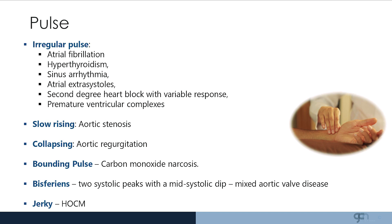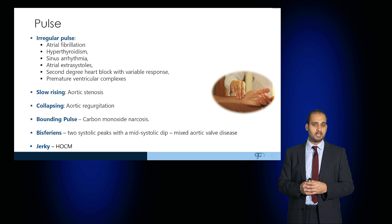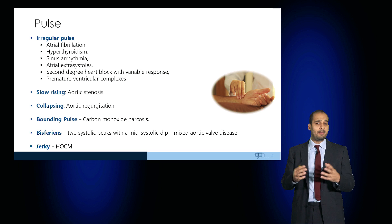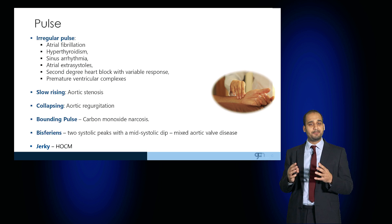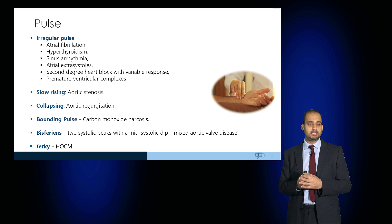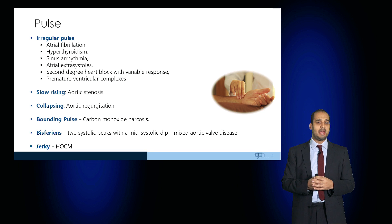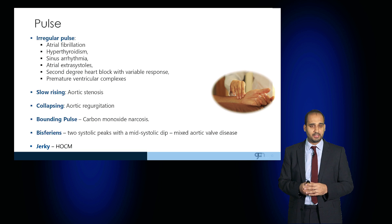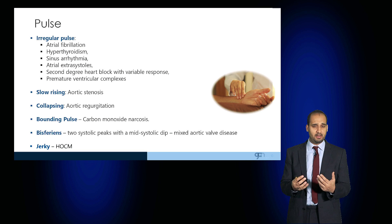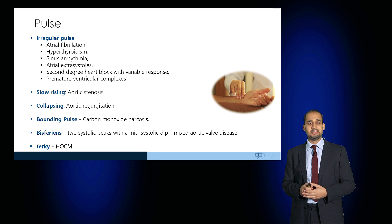When examining the pulse, assess for irregularity. An irregular pulse may be due to atrial fibrillation or sinus arrhythmia, and this can be driven by hyperthyroidism. Other pulse types include a slow-rising pulse due to aortic stenosis, a collapsing pulse due to aortic regurgitation, a bounding pulse due to carbon monoxide narcosis, a bisferiens pulse where there are two systolic peaks, or a jerky pulse associated with hypertrophic obstructive cardiomyopathy. Superimposing any of these conditions with hyperthyroidism may accelerate cardiovascular disease.